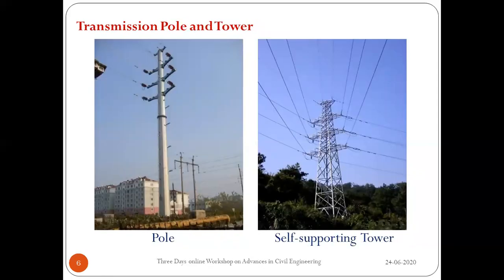This picture shows a pole and a tower. The left side shows a pole, normally adopted for lower voltage levels. On the right side, we have a self-supporting tower — self-supporting means it doesn't need any additional guys to stand. Towers are normally made up of steel angle sections, and poles are made up of steel plates welded together to make a tapered circular cross-section.